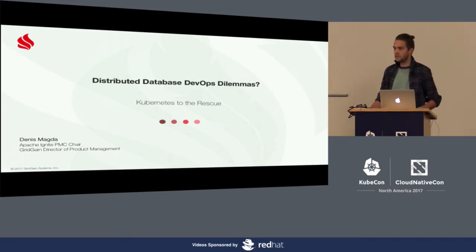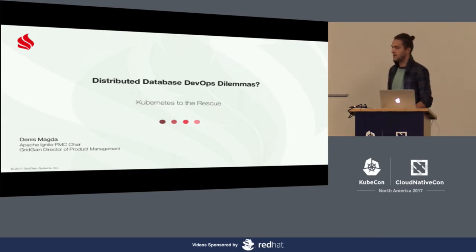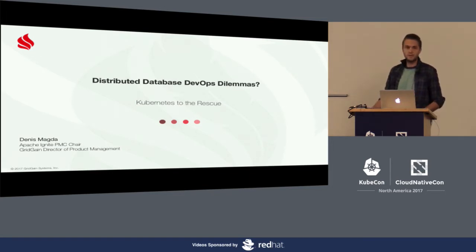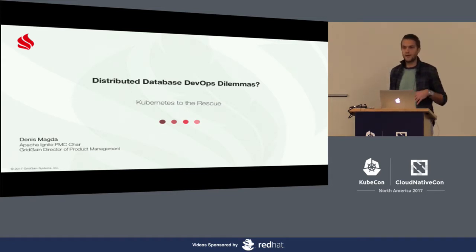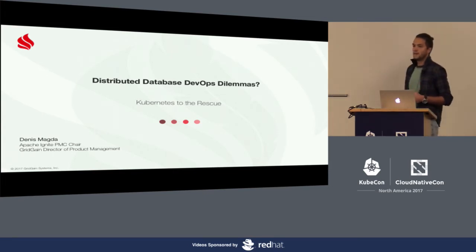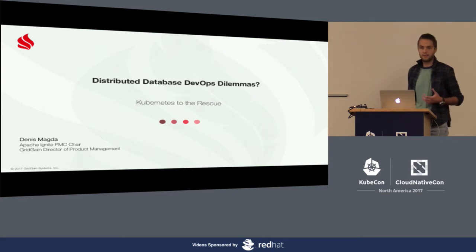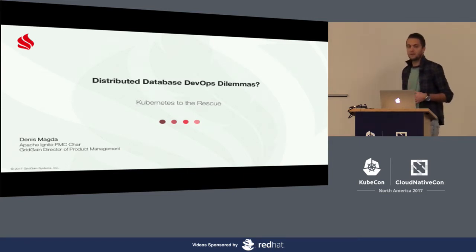We're going to talk about Apache Ignite in relation to Kubernetes during this presentation. Apache Ignite is a distributed database and computational platform that we are developing at Apache Software Foundation. I'm going to share my personal experience on how you could stick together Kubernetes with our distributed database, and give you an understanding of where the responsibility lies — for the distributed database, for Kubernetes itself, for DevOps, and for application developers.